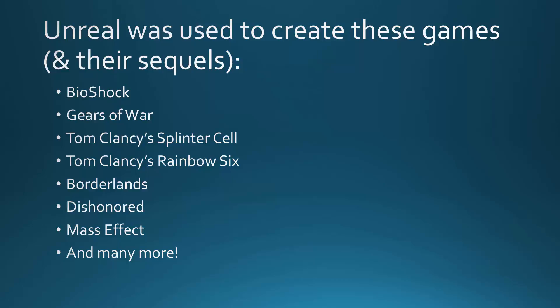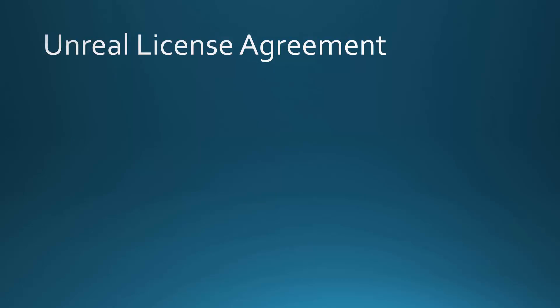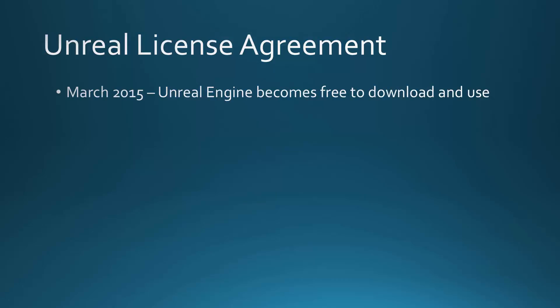So Epic Games decided to make a bold move and adopt a similar business model. As of March 2015 the Unreal Engine is now completely free to download and use. The only stipulation is that if you create something on it and release it commercially and it makes more than $3,000 in a single quarter — meaning a quarter of a year — then you have to pay a 5% royalty to Epic Games for any sales above the $3,000. That's quite a good deal, because now for the first time ever the Unreal Engine is accessible to amateurs, hobbyists, and indie developers like you and I, and not just the major game studios of the world.